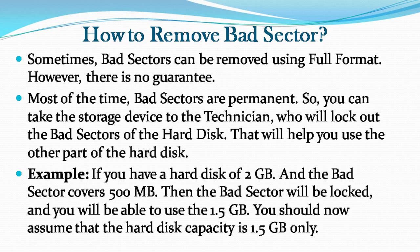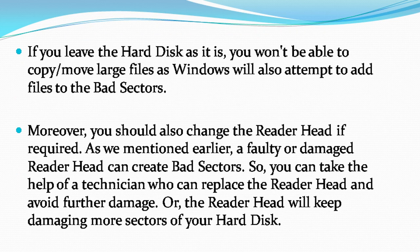For example, if you have a hard disk of 2 GB and the bad sector covers 500 MB, then the bad sector will be locked and you will be able to use the 1.5 GB. You should then assume that the hard disk capacity is 1.5 GB only. If you leave the hard disk as it is, you won't be able to copy or move large files, as Windows will also attempt to add files to the bad sectors.